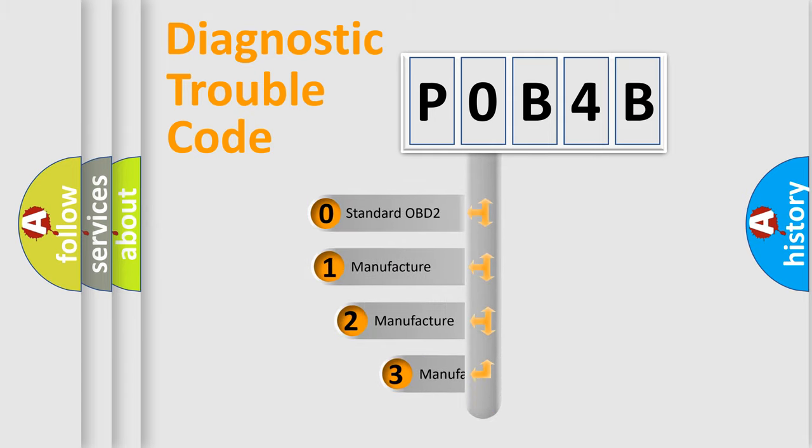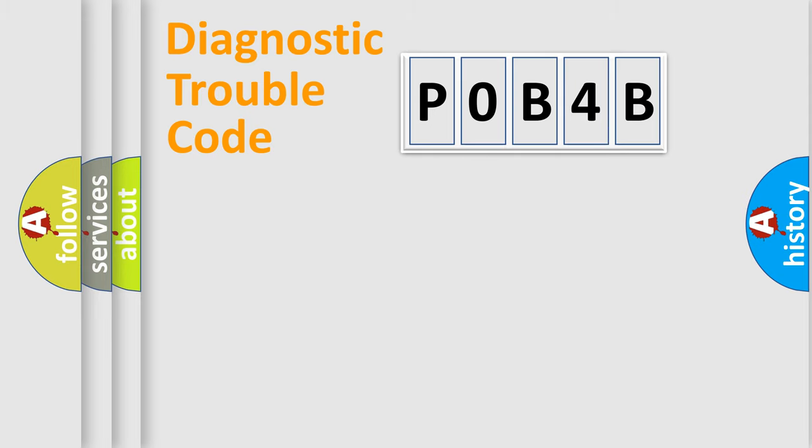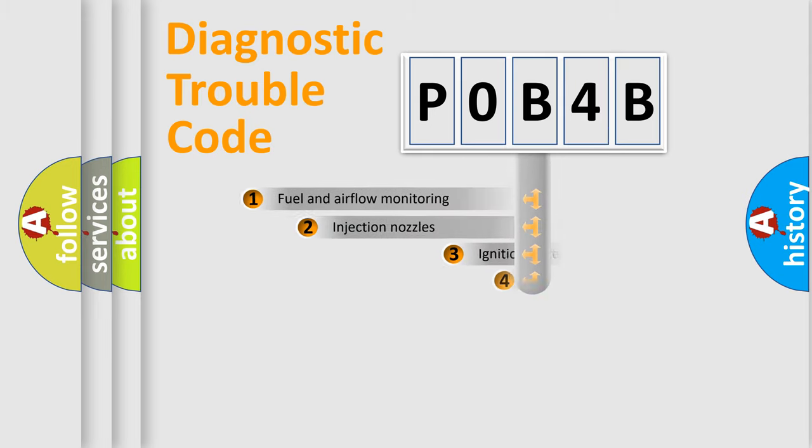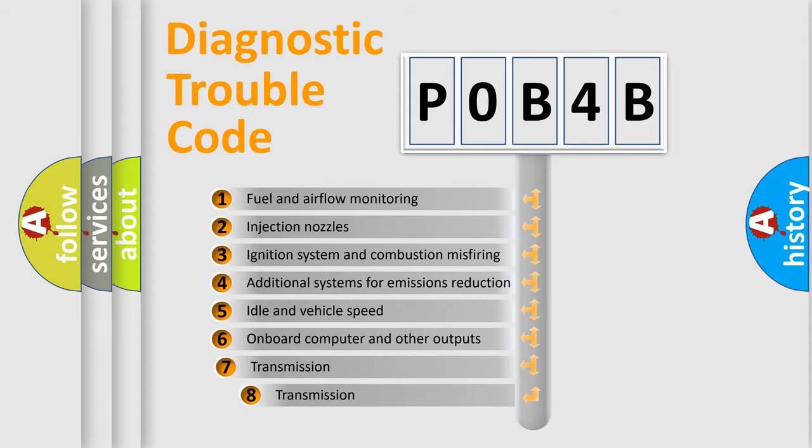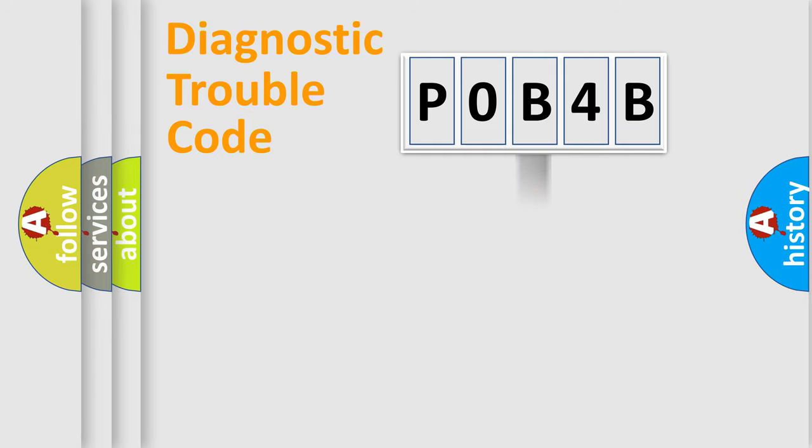If the second character is expressed as zero, it is a standardized error. In the case of numbers 1, 2, or 3, it is a more specific expression of a car-specific error. The third character specifies a subset of errors. The distribution shown is valid only for the standardized DTC code.